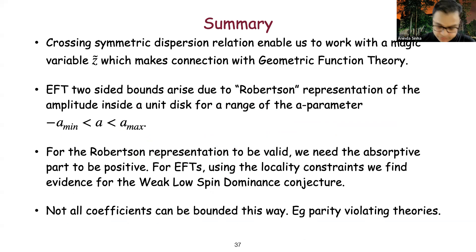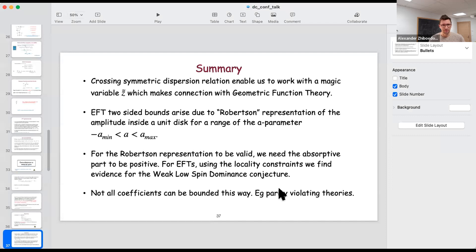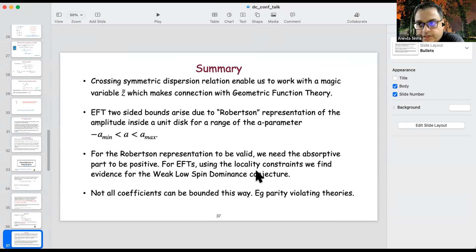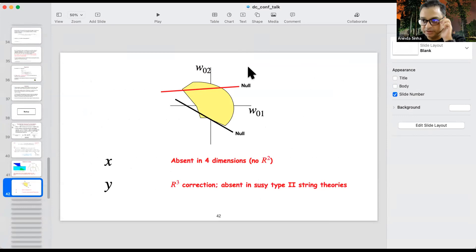Thank you for listening, and sorry for slightly going over time. We may have time for one short question. The question was: in your story, is there a way to forget about locality constraints, derive some bounds, and then have the locality constraints impose a geometric slice? Yes, indeed it is possible. You get a larger space, and then these locality constraints slice up the space. In fact, I had a cartoon to show exactly that.